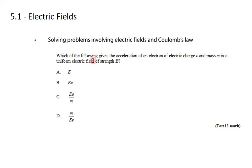In this question we're asked, which of the following gives the acceleration of an electron with electric charge e and mass m? So we want the acceleration of an electron. We're given the charge and the mass symbolically.